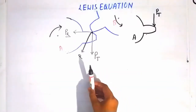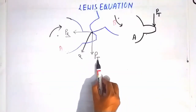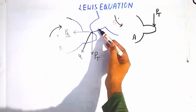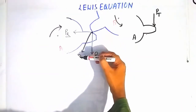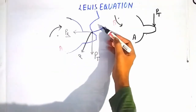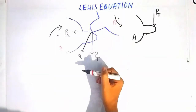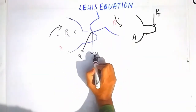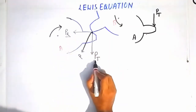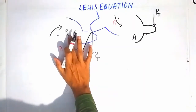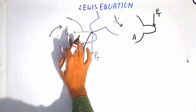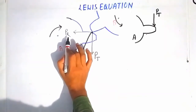FT is the tangential component of the load, which is obtained after resolving the resultant force being applied by the tooth of gear B on the tooth of gear A. The resultant force P is resolved into two components: PT, the tangential component, and PR, the radial component. PT is responsible for power transmission and PR is not, so we will neglect PR in our further discussion.